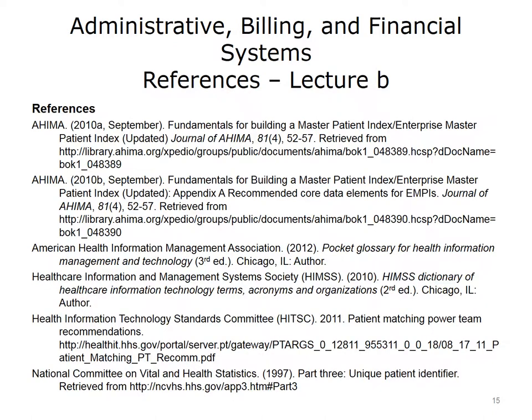This concludes Administrative, Billing, and Financial Systems. Lecture A examined the relationship of administrative, billing, and financial systems to the healthcare information system, explained applications that need to be integrated in healthcare information systems, explored healthcare organizations' integration strategies, identified the critical elements for integration of these systems with clinical information systems, and discussed how healthcare organizations may gain valuable insights from integrated data through data analytics and trending. Lecture B defined a Master Patient Index, or MPI, and described its core elements and discussed current trends to establish a unique patient identifier.